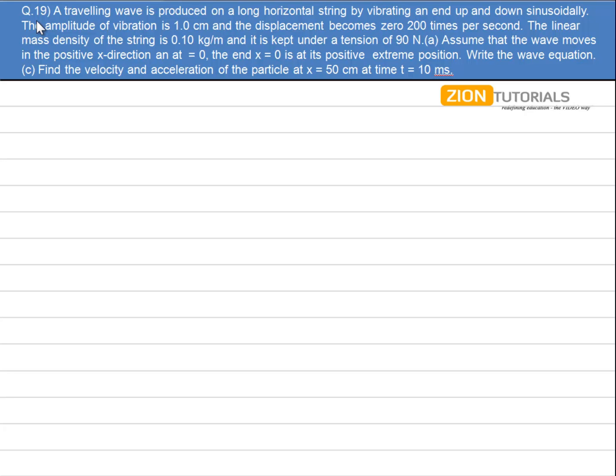A traveling wave is produced on a long horizontal string by vibrating an end up and down sinusoidally. The amplitude of vibration is 1 cm and the displacement becomes 200 times per second. The linear mass density of the string is 0.1 kg per meter and it is kept under a tension of 90 N. Assume that the wave moves in the positive x-direction and write the wave equation.